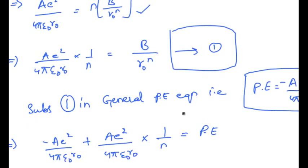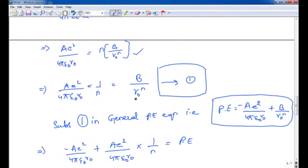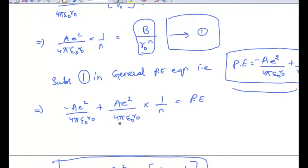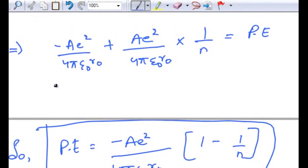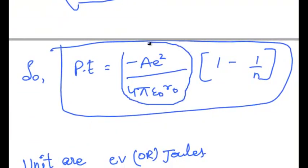Substituting equation 1 into the general potential energy equation, PE is equal to minus a e square by 4 pi epsilon not into r naught plus b by r naught power n, and substituting the value of b by r naught power n, we get minus a e square by 4 pi epsilon not into r naught plus a e square by 4 pi epsilon not into r naught into 1 by n. Taking common, we get minus a e square by 4 pi epsilon not into r naught into 1 minus 1 by n. This is the minimum potential energy or the cohesive energy of the ionic solid.